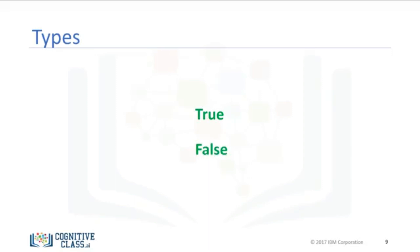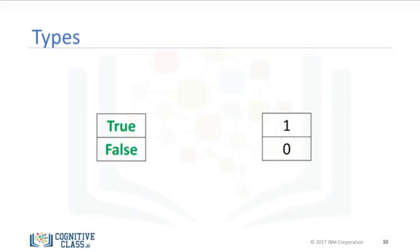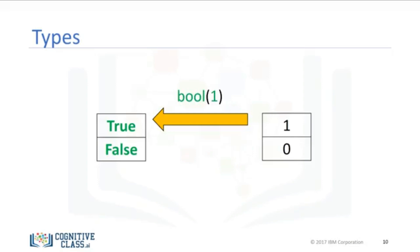Using the type command on a Boolean value, we obtain the term bool. This is short for Boolean. If we cast a Boolean true to an integer or float, we will get a 1. If we cast a Boolean false to an integer or float, we get a 0. If you cast a 1 to a Boolean, you get a true. Similarly, if you cast a 0 to a Boolean, you get a false. Check the labs for more examples, or check python.org for other kinds of types in Python.